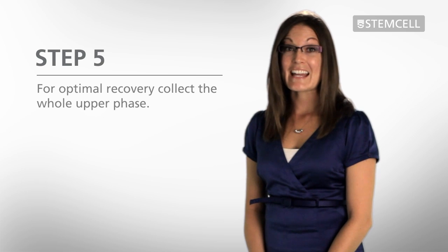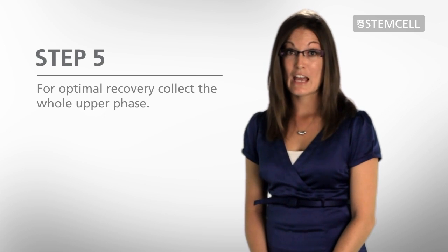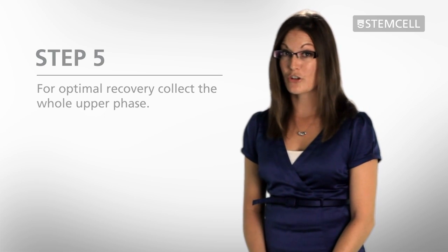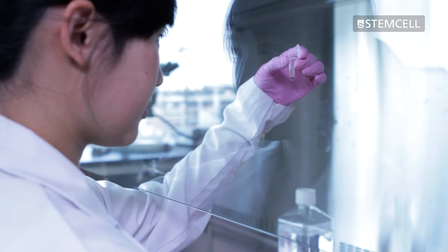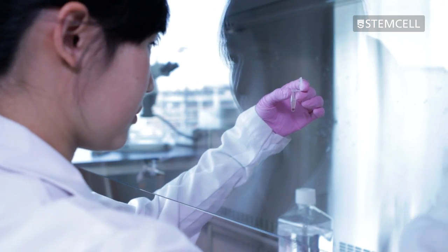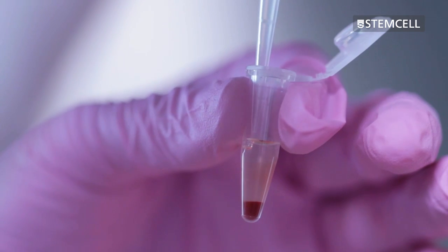For optimal recovery, collect the whole upper phase, but take care not to disturb the red blood cell pellet. Hold the tube at eye level and place the tip approximately midway through the upper phase above the RBC pellet.